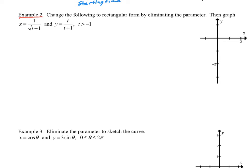Example 2 says to change the following to rectangular form by eliminating the parameter. So we've got to get rid of t, then we want to graph this. To get rid of t, we've got to solve for t in one of the equations. So let's solve for t in this one, and then we'll plug it into the y function wherever we see that t. So eliminating the parameter — if I square this and then solve for t, I get t is equal to 1 over x squared minus 1.